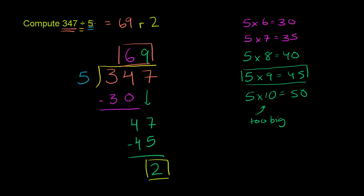Or another way to think about it is 5 times 69 is 345. So you're always going to have 2 left over in this circumstance. So that is our answer.